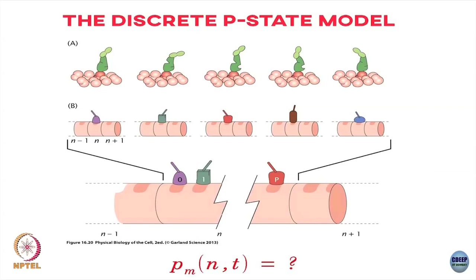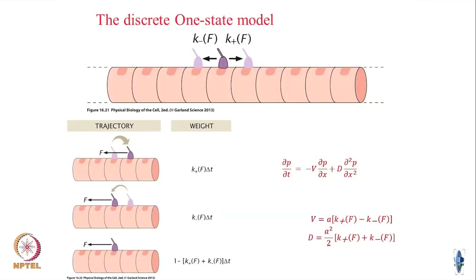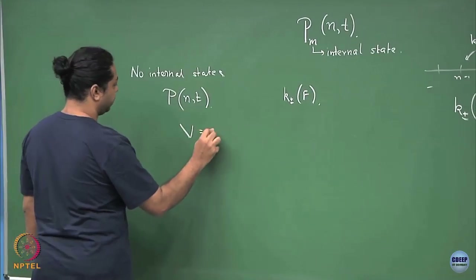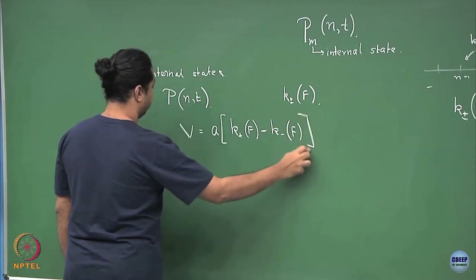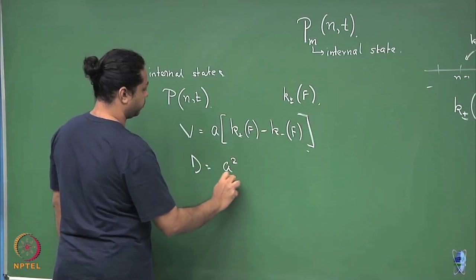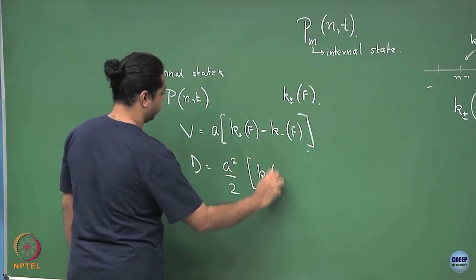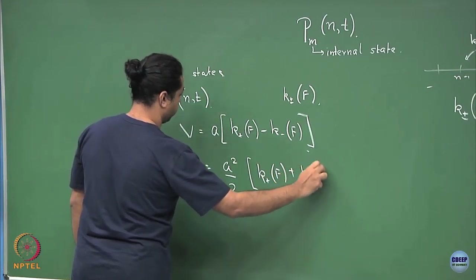The force could come from in vitro experiments like optical traps where you pull on the motor explicitly, or it could arise cooperatively due to the effect of opposite kinds of motors — if dyneins and kinesins were both bound, each would exert force on the other. In this framework, if the rates are simply functions of force, you can write down the master equation. Taking the continuum limit gives a velocity v = (k+ - k-) as a function of f, and diffusion constant D = a² / 2 · (k+ + k-).